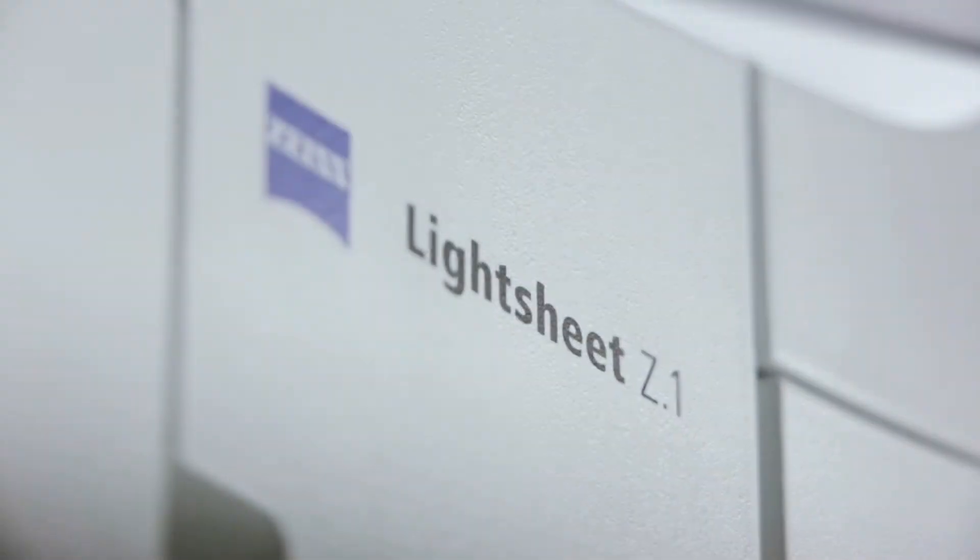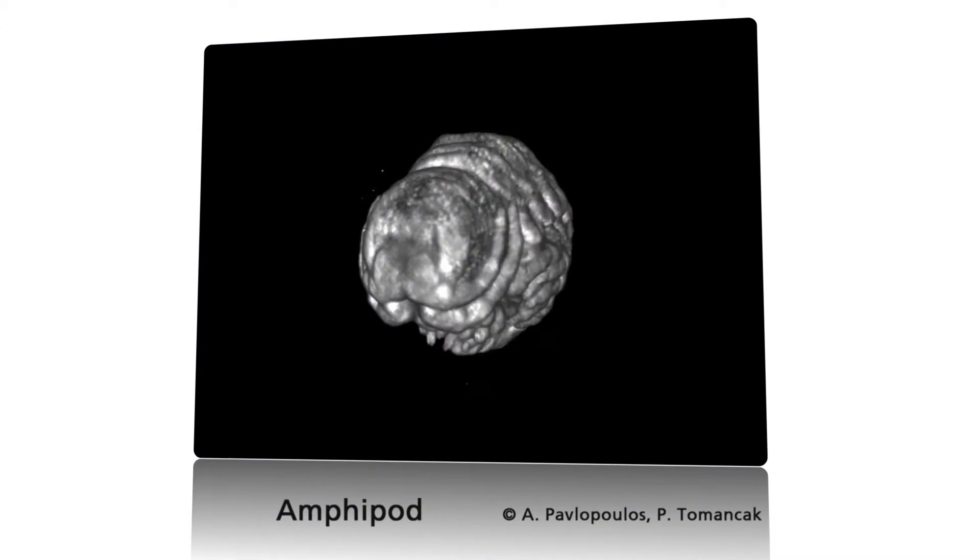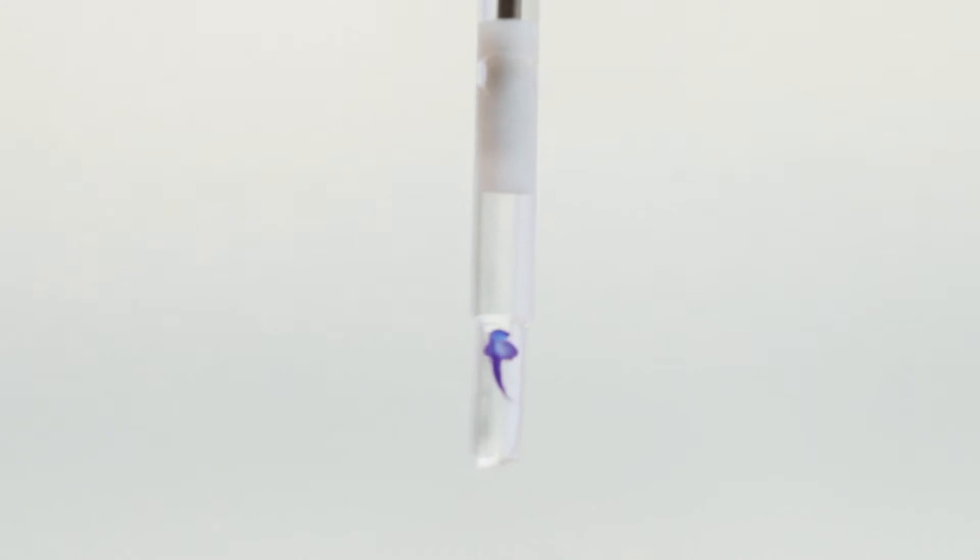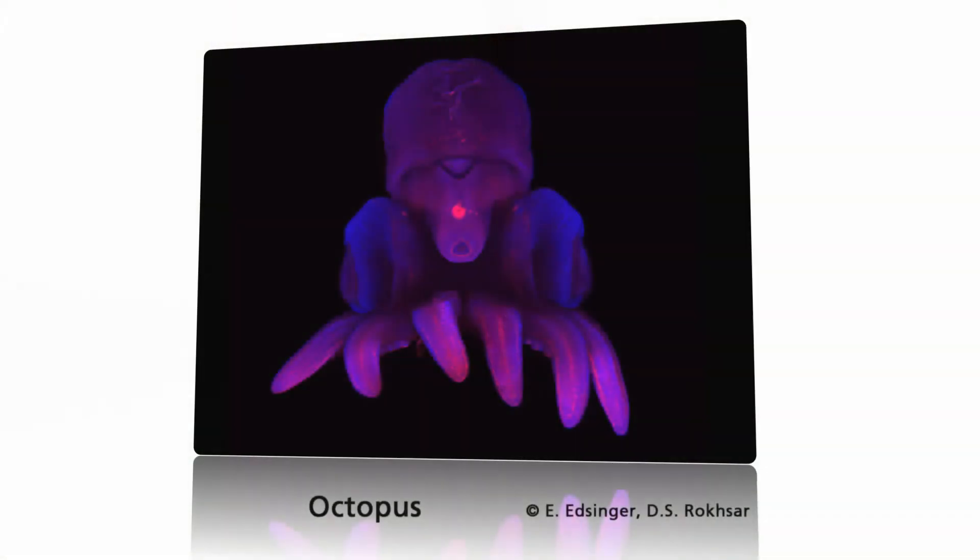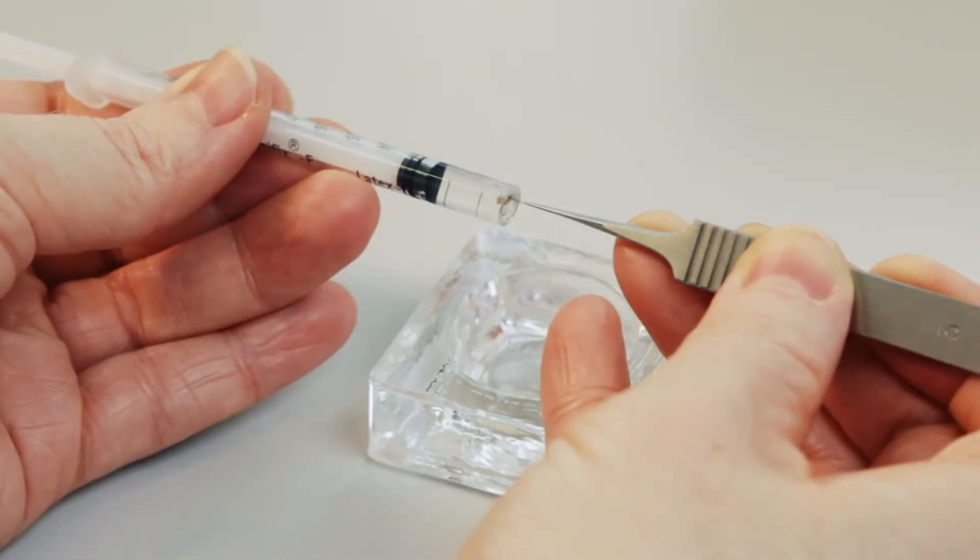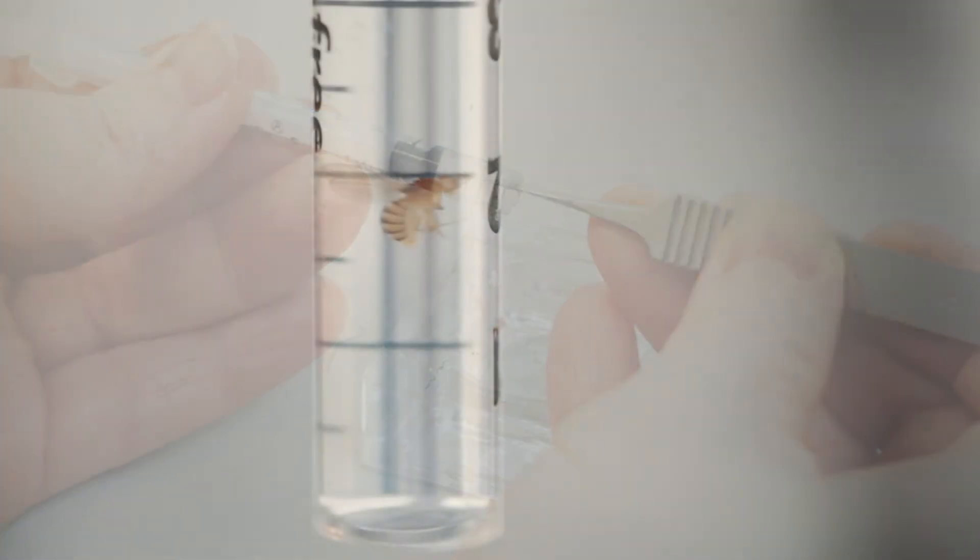One big advantage of LightSheet Z1 is that three-dimensional specimens are not confined to slides or petri dishes, but embedded in a clear gel. The developing organisms benefit from having just the right physiological conditions and next to no mechanical stress.